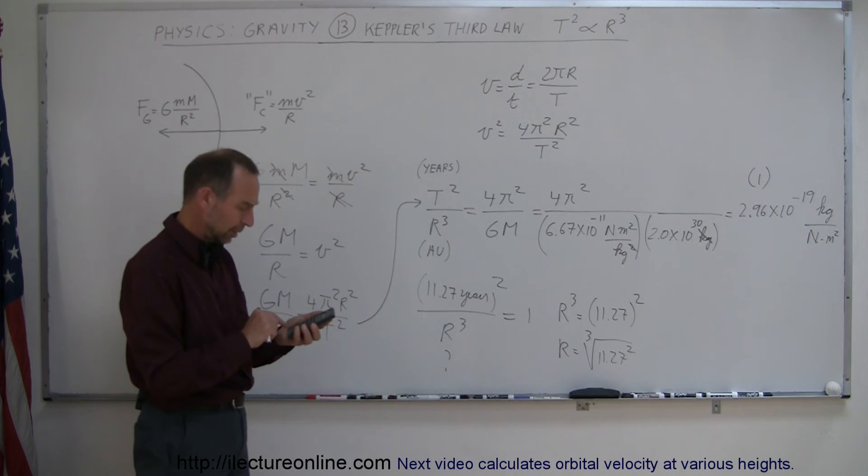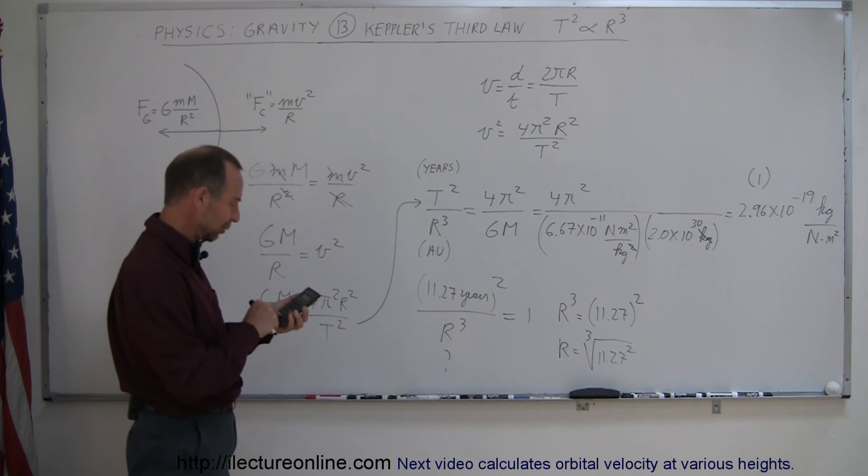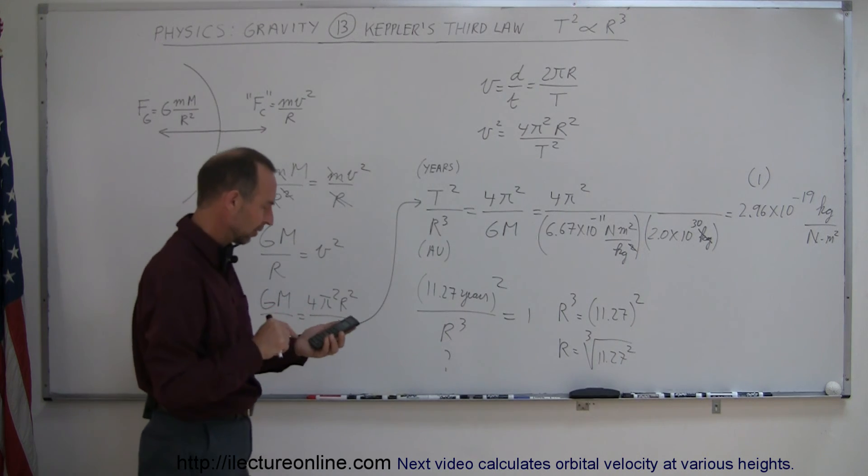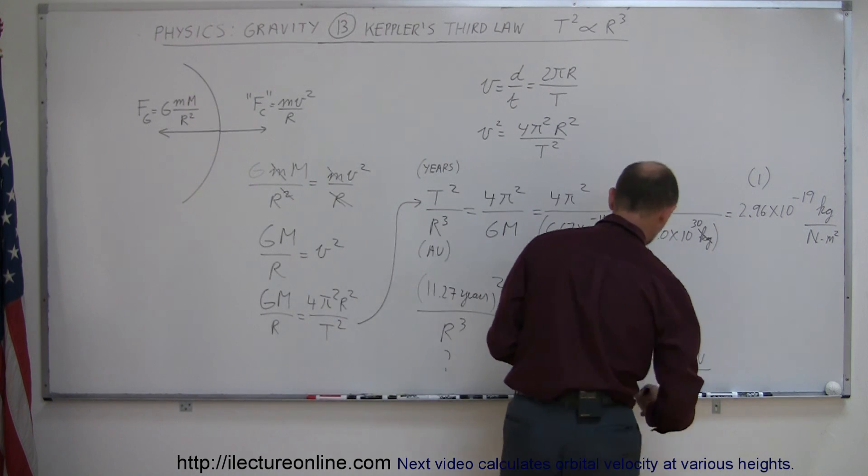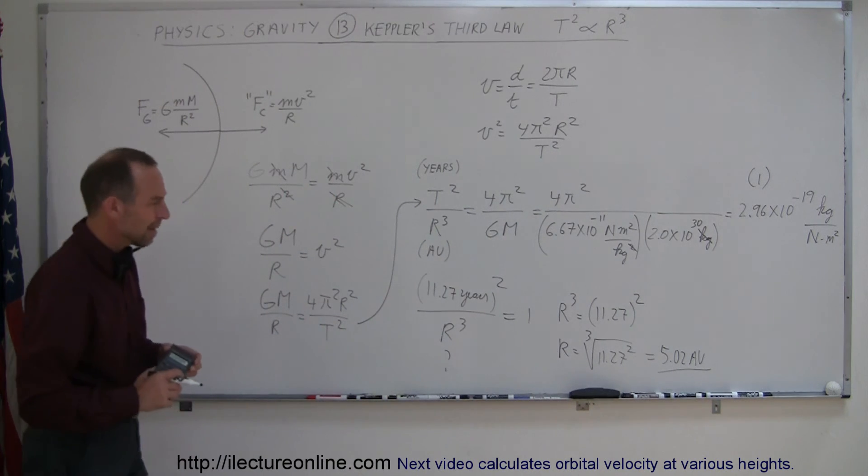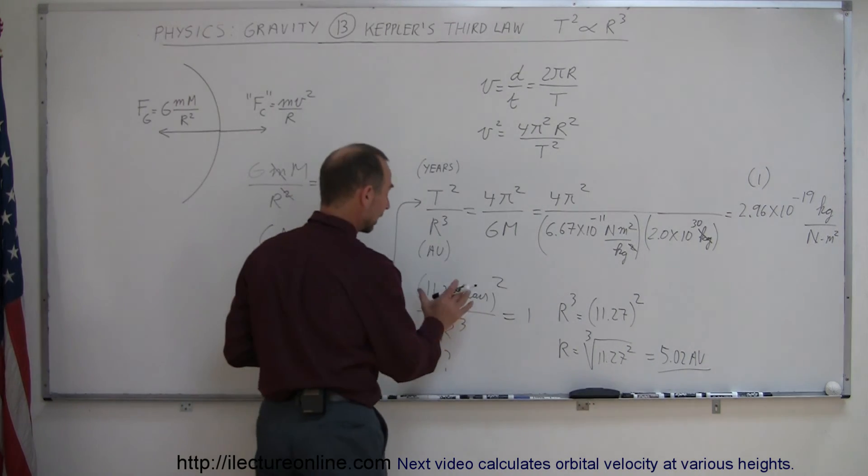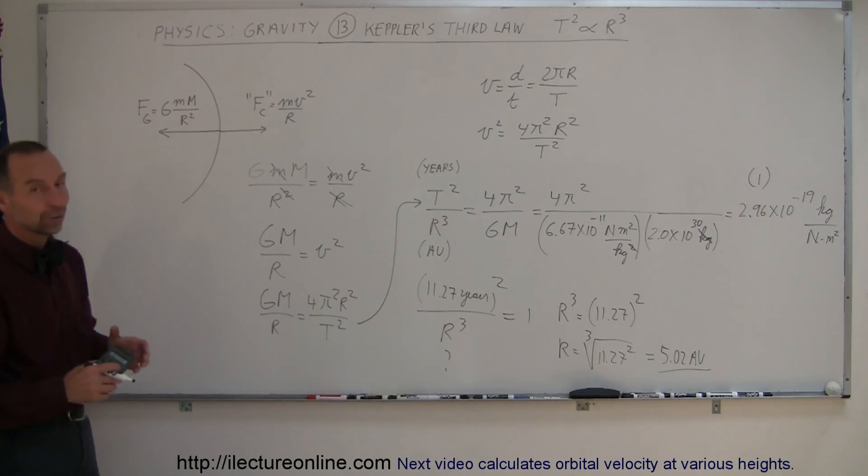So, if we take 11.27 squared, 11.27, and we square that, and then we take the cube root of that, so 1 divided by 3 equals, and it's about 5.02 astronomical units, which is fairly close. I just kind of guessed that the orbital period of Jupiter being about 11.27 years, I'm probably off by a little bit, but it gives you the idea of how we did that. Careful measurements of the orbital period will give you very accurate indications of the radius of the orbit, and also of the distance.